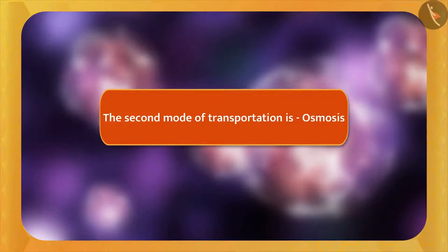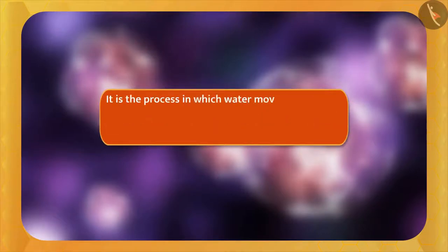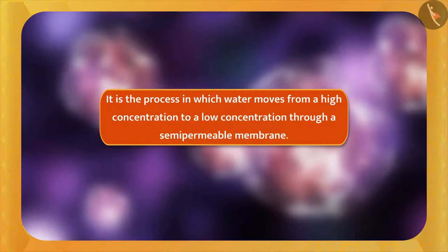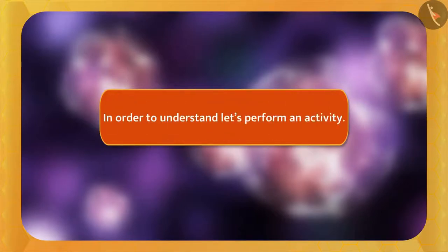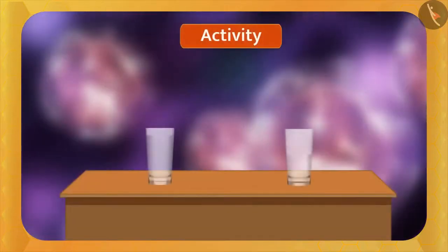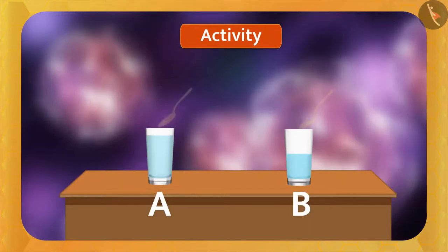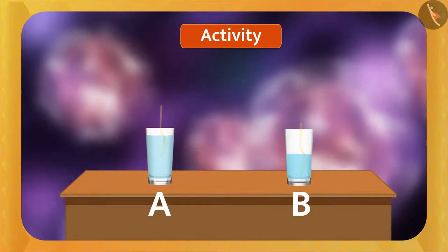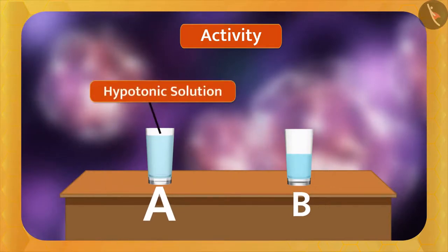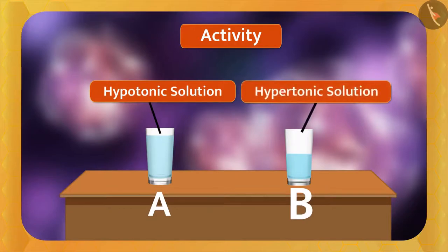The second mode of transportation is osmosis. It is the process in which water moves from higher concentration to low concentration through a semi-permeable membrane. In order to understand, let's perform an activity. Take two glasses, A and B. Add some water in glass A, then glass B. Now mix equal amounts of sugar or salt in them and make a solution. If both these solutions are compared, the concentration of water in glass A is higher than that of glass B. So the solution of glass A will be called a hypotonic solution, while the solution of glass B, where the concentration of water is lower, will be called a hypertonic solution.